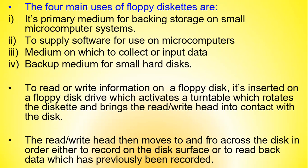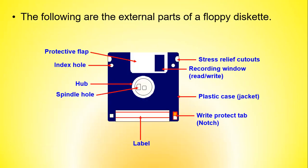To read or write information on a floppy disk, it was inserted on a floppy disk drive, which activated a turntable that rotated the disk and brought the read-write head into contact with the disk. The read-write head then moved to and fro across the disk to record on the disk surface or to read back previously recorded data. The external parts of a floppy disk head included: protective flap, index hole, hub speed hole, label, write-protect tab or notch, plastic case or jacket, recording window, and stress relief cutouts.